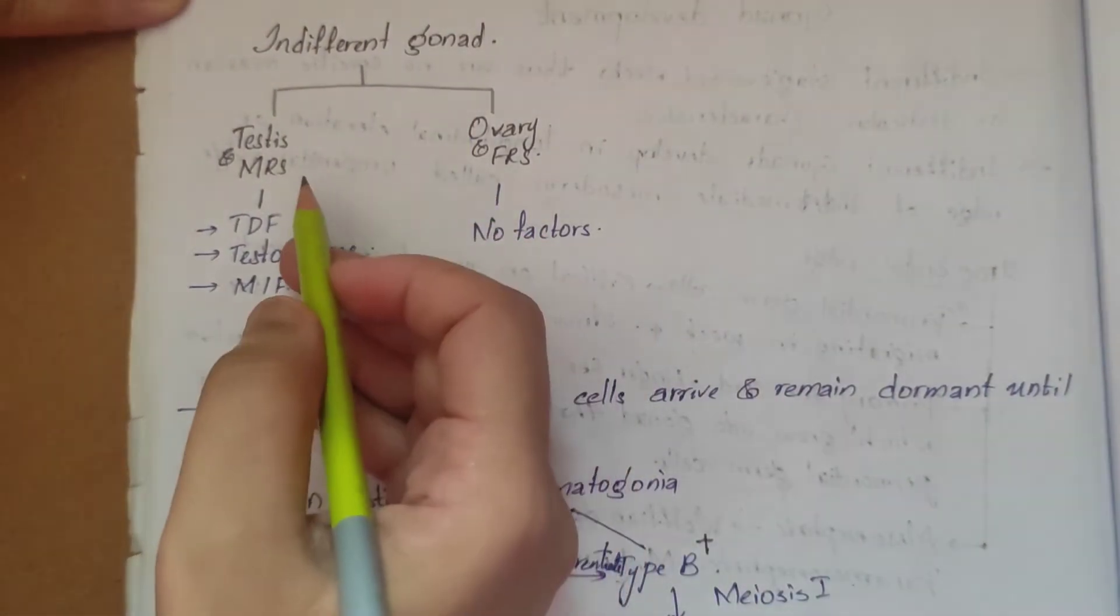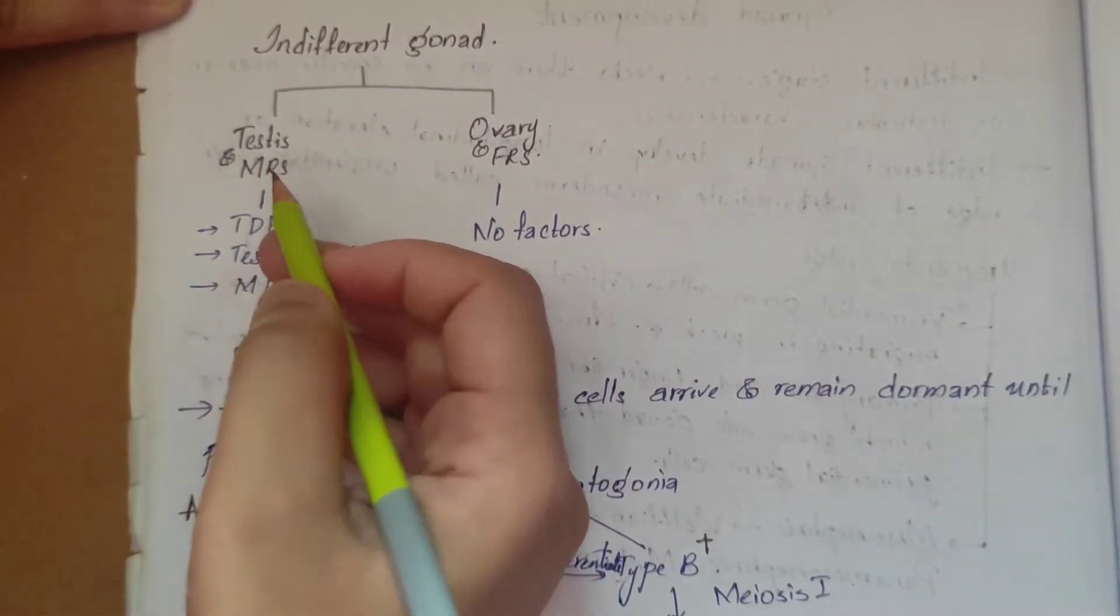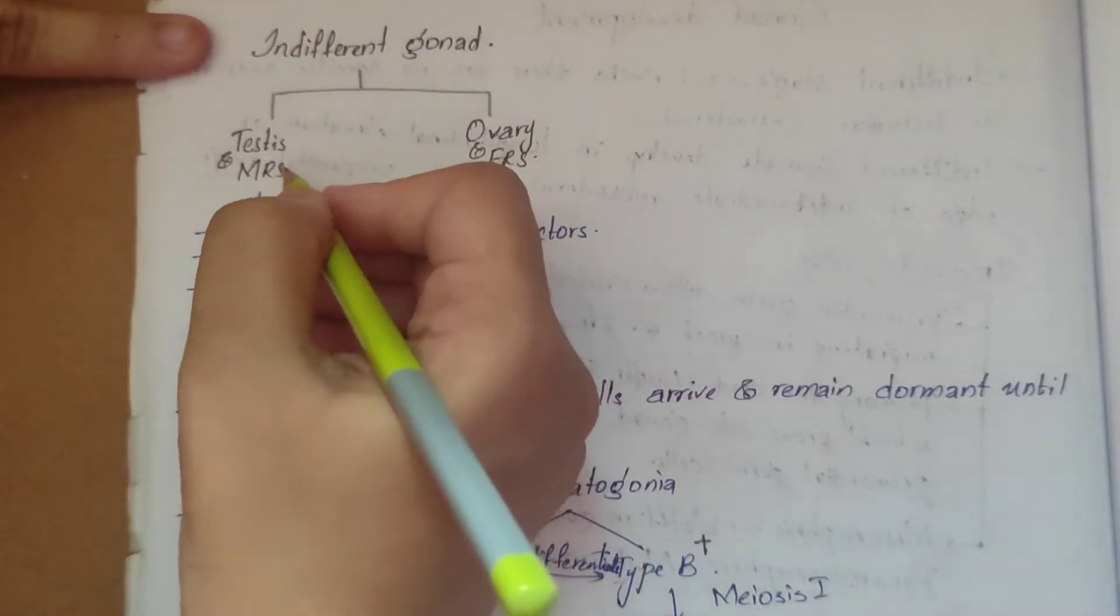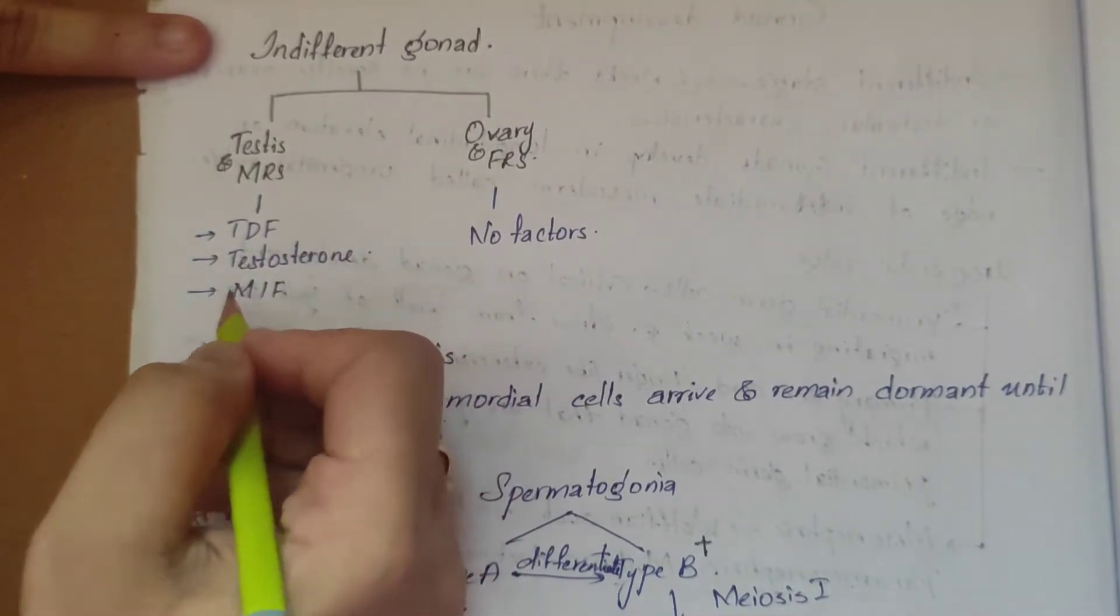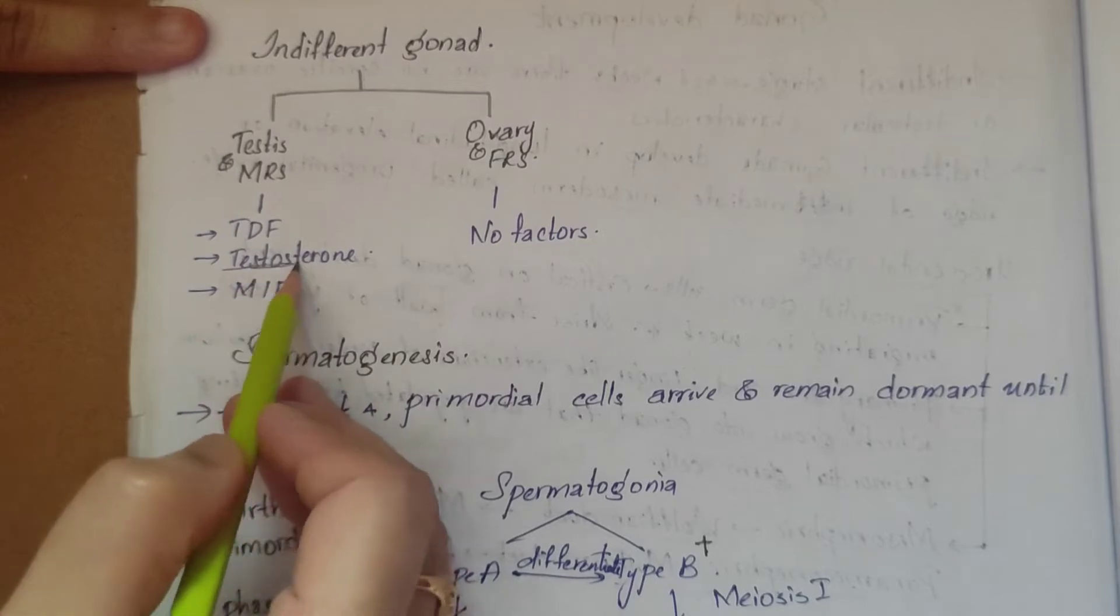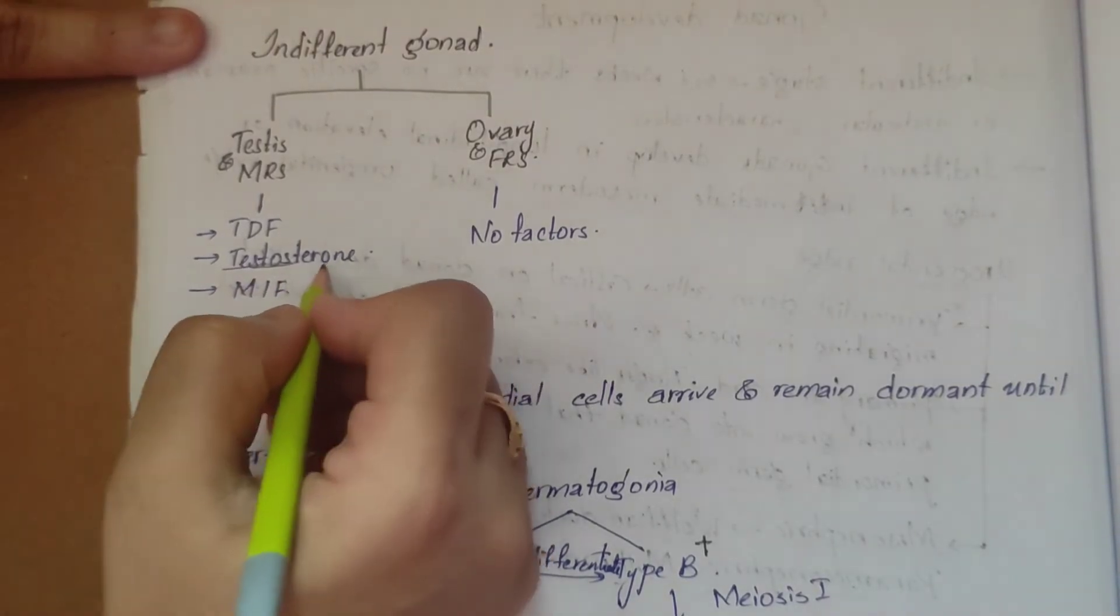In the indifferent gonad, testis in the male reproductive system and ovary in the female reproductive system: testis has three factors - testis determining factor, Müllerian inhibiting factor, and testosterone, which are produced from the Leydig cells. Ovary has no factors.